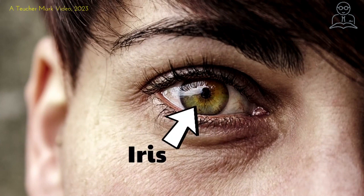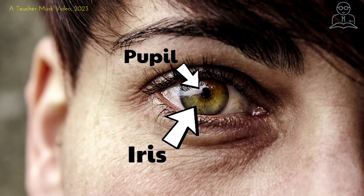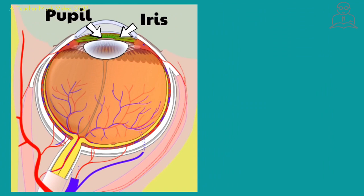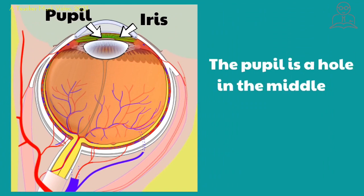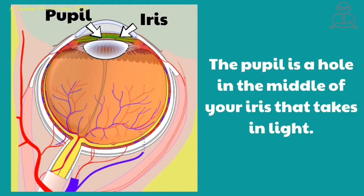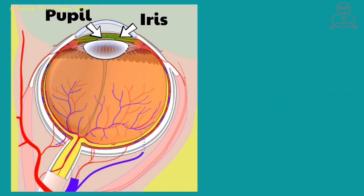In the middle of the iris is a black dot — that's called the pupil. The pupil is a black dot right in the middle of the iris. The pupil is actually a hole in the middle of your iris that takes in light. Your iris has muscles in it that make your pupil either larger or smaller depending on how much light is around you. If it's dark in the room, your pupils will be larger. If it's bright in the room, your pupils will be smaller, because your eyes will not want to take in as much light.